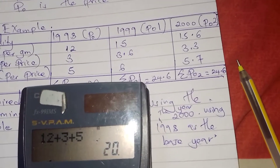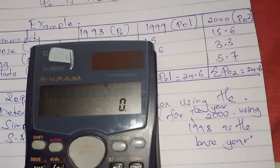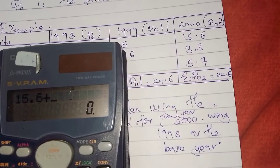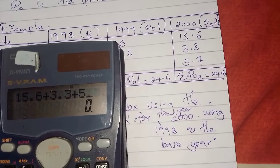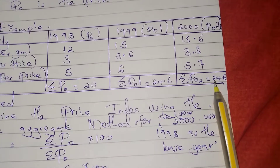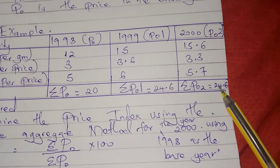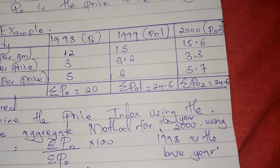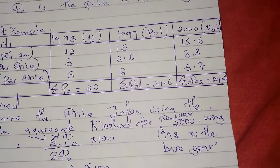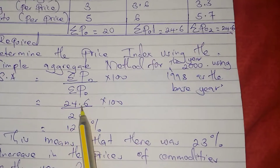We get 20, so that becomes our summation P-naught. Then for the year 2000, we also add: 15.6 plus 3.6 plus 3.3 plus 5.7, which gives us 24.6. So 24.6 is our Pn. Applying the simple aggregate method formula — summation Pn divided by summation P-naught times 100 — we have 24.6 as our summation Pn.